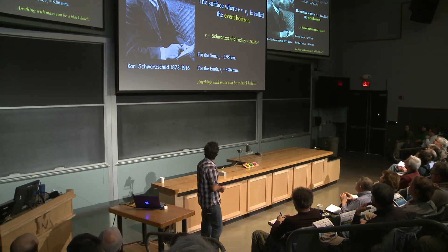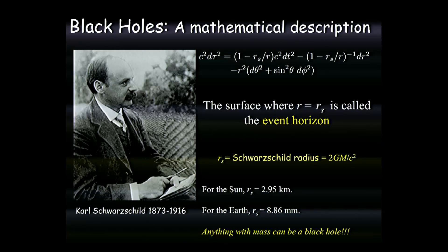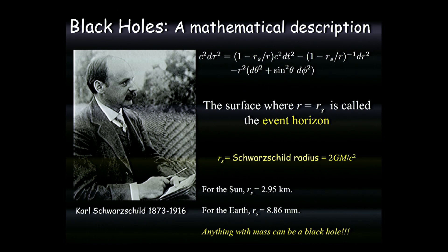It wasn't until 1915 that Einstein came up with his equations. Just about a year later, this mathematician Karl Schwarzschild solved one of the equations and made a metric that defines the space and time around the black hole. He solved this equation about a year after Einstein came up with relativity, and then he died a year later because he joined the First World War and died of an autoimmune disease in the trenches. What I want everybody to look at is the value r over r_s in the Schwarzschild metric. That r_s is the Schwarzschild radius.